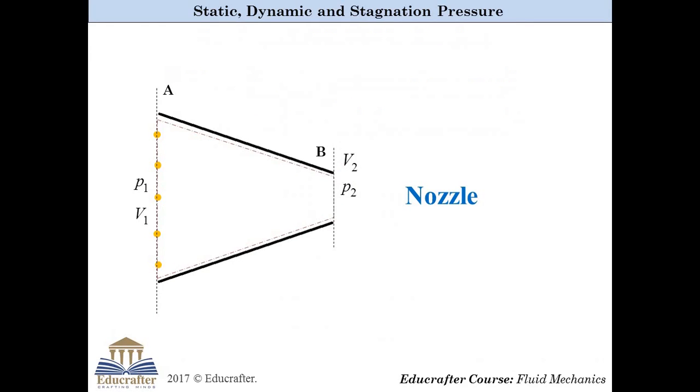Let's start with an example. Take a nozzle. At section A, pressure is P1 and velocity is V1. At section B, pressure is P2 and velocity is V2.